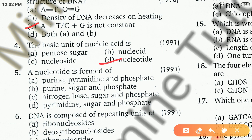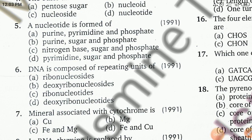So the correct answer to question four is nucleotide. The fifth question asks: a nucleotide is composed of which components? Options are purine/pyrimidine/phosphate, purine/sugar/phosphate, nitrogen base/sugar/phosphate, or pyrimidine/sugar/phosphate. The right answer is nitrogen base, sugar, and phosphate.